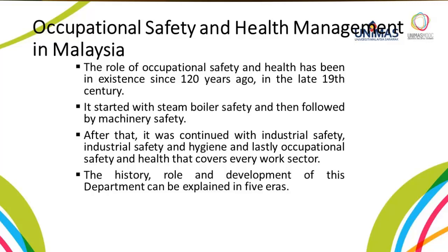For occupational safety and health management in Malaysia, the role of OSH has been in existence since 120 years ago in the late 19th century. It started with steam boiler safety, then followed by machinery safety, industrial safety, industrial safety and hygiene, and lastly occupational safety and health that covers every work sector. The history, role, and development of this department has gone through five eras: the steam boiler era, the machinery safety era, the industrial safety era, the industrial safety and hygiene era, and the occupational safety and health era, which is the current act used in Malaysia.